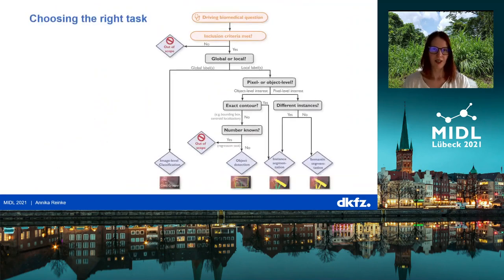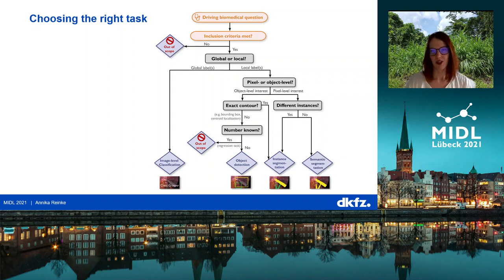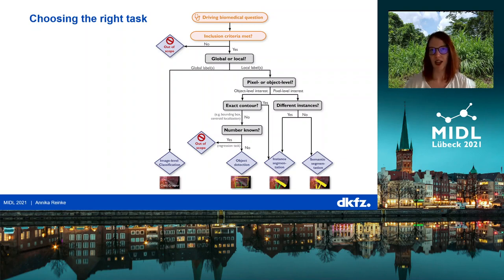The task mapping will ask you different questions. For example: do you have global or local labels? If local, are you interested in pixels or objects? Do you know the exact contour? All these things will then lead you to the correct image processing task.